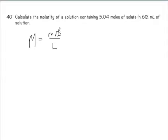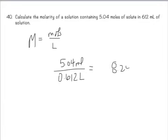Molarity is nothing more than moles of solute per liter of solution, so you know the number of moles, 5.04 moles, and then you know 612 milliliters, so all you have to do is convert that to liters, move the decimal place three places to the left, 0.612 liters, divide, you get 8.24 molar.